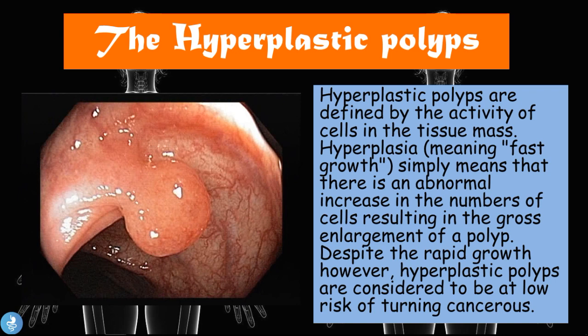The hyperplastic polyps are defined by the activity of the cells in the tissue mass. Hyperplasia — meaning fast growth — simply means there is an abnormal increase in the number of cells resulting in the gross enlargement of a polyp. Despite the rapid growth, hyperplastic polyps are considered to be at low risk of turning cancerous, so they usually aren't really that serious.